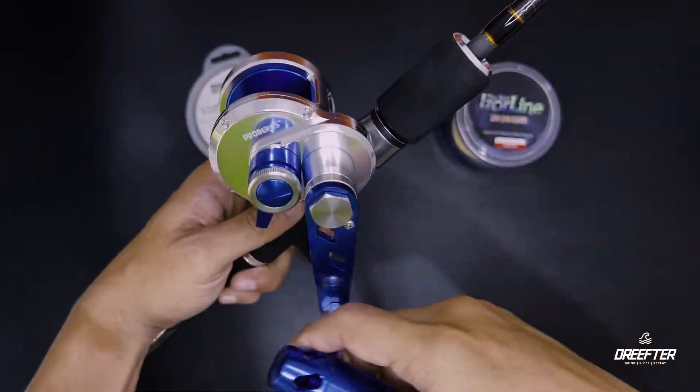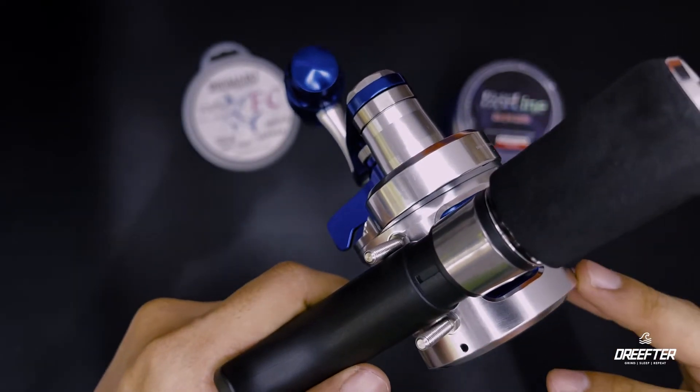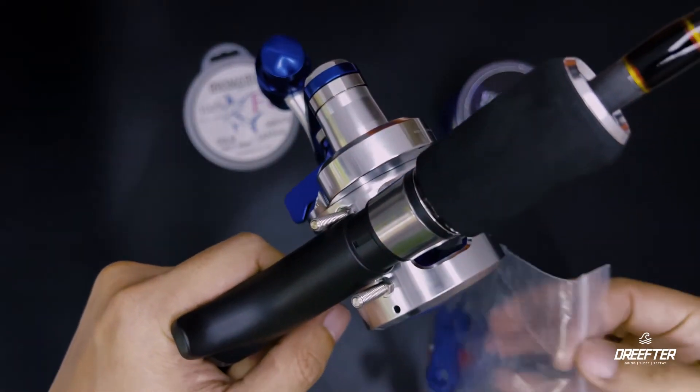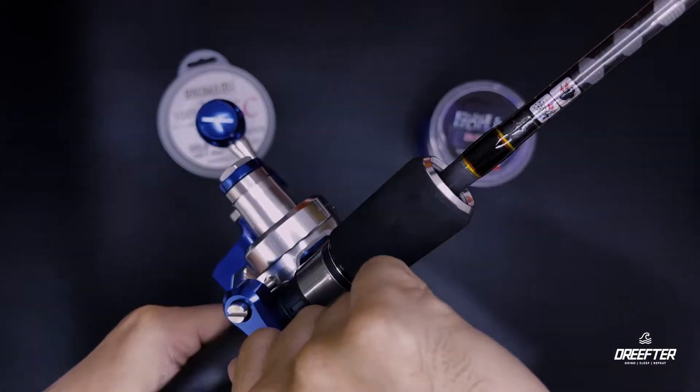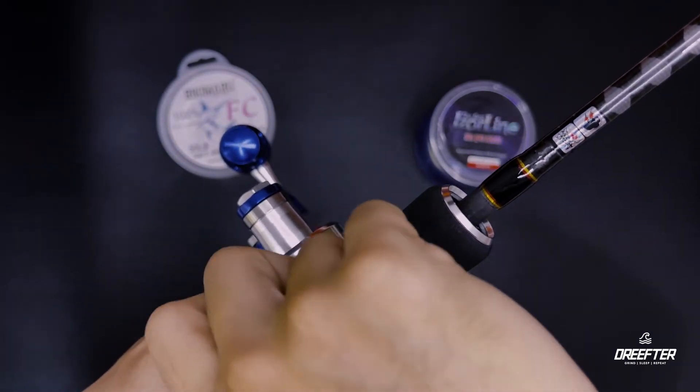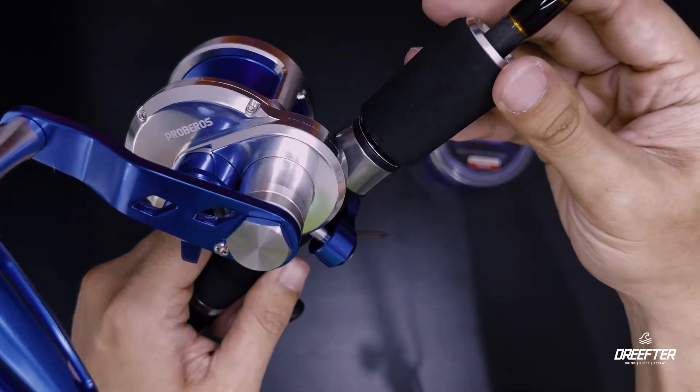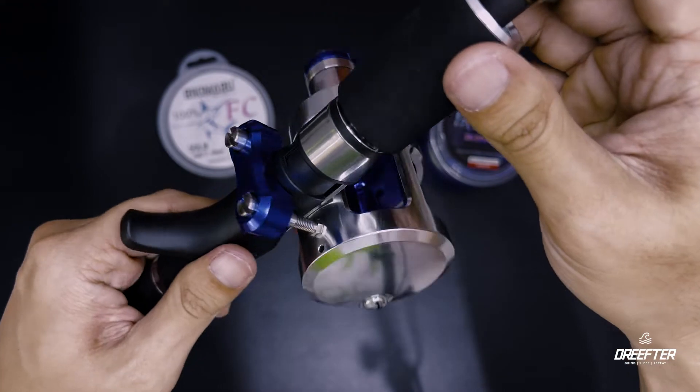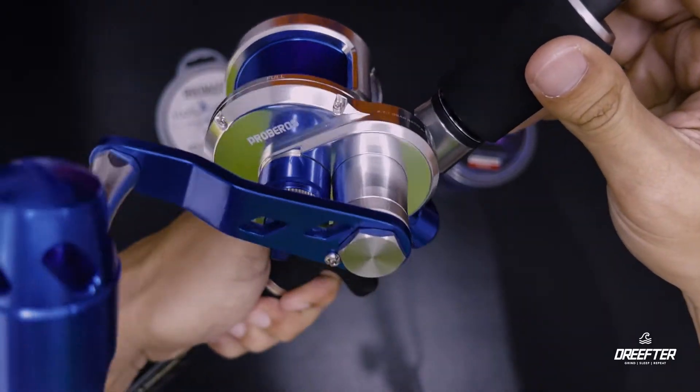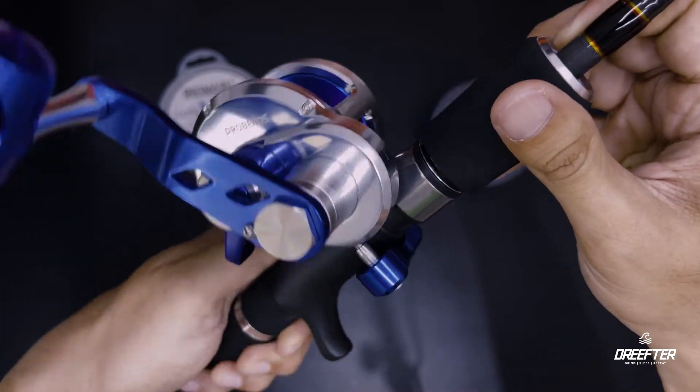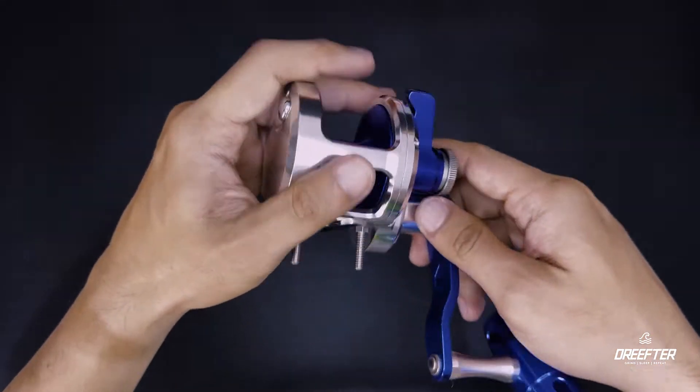So sa part na ito, dito natin ilalagay yung cover para ma secure natin yung reel sa ating rod. Sige, try natin install. So this is how it looks pag ma install yung cover sa baba. Hindi ko na hinigpitan kasi sample lang naman. Pero most of the anglers hindi na nila nilalagay yung cover dito sa baba kasi medyo masakit kasi sa kamay, so tinatanggal na lang nila. Eto, I'll show you how to remove the bolts.